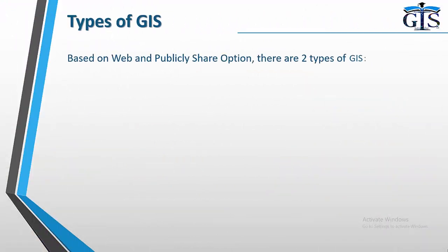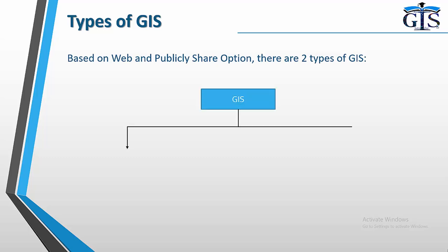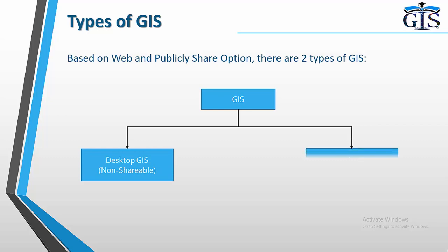Now let's see the types of GIS. Based on web and public sharing options, there are two types of GIS: one is Desktop GIS, which is non-shareable; and another is Web GIS, which is shareable by using the web and internet.